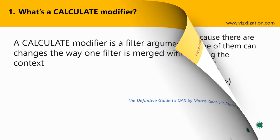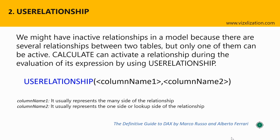The first modifier is USERELATIONSHIP. We might have inactive relationships in a model because there are several relationships between two tables, but only one of them can be active. CALCULATE can activate a relationship during the evaluation of an expression using USERELATIONSHIP. The syntax has two parts: column name one, which represents the many side of the relationship, and column name two, which represents the one side or lookup side.